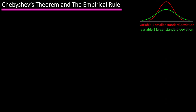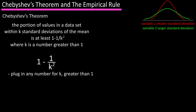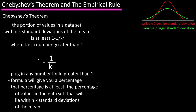Now, Chebyshev's theorem states that the portion of values in a data set within k standard deviations of the mean is at least 1 minus 1 over k squared, where k is a number greater than 1. In simple terms, you can plug in any number for k greater than 1, and this formula will give you a percentage — at least the percentage of values in the data set that will lie within k standard deviations.